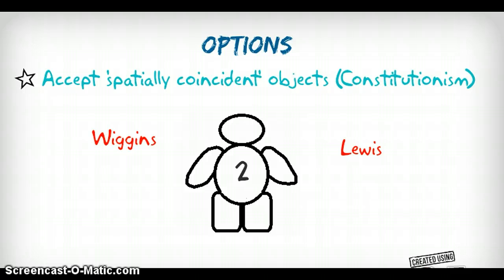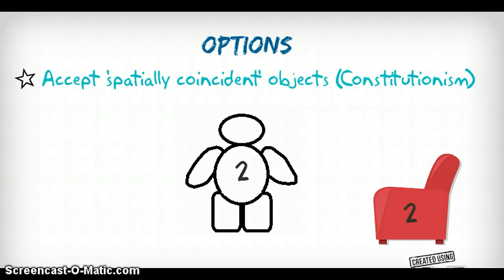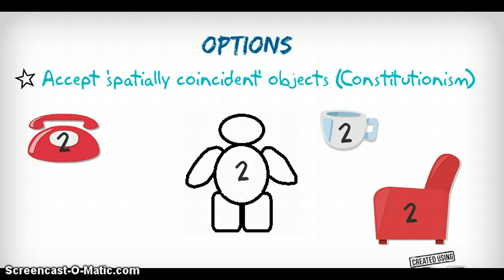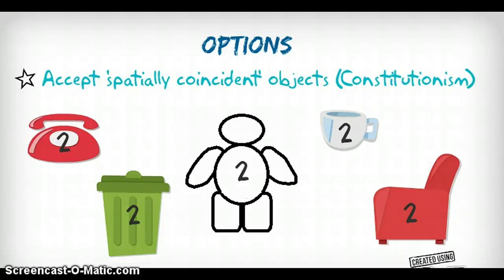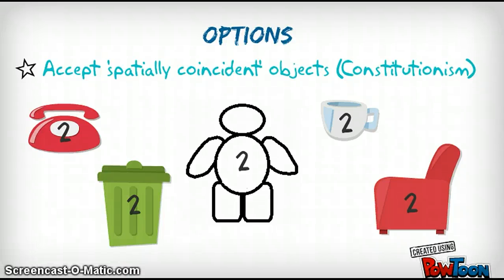Now, there are a number of problems with this view, but let's note just one for the time being. We might want to call it the problem of overpopulation, for according to this view, the chair that you're sitting on is not one but two objects. Your telephone is not one but two objects. Your teacup is two objects. Your rubbish bin is two objects. Indeed, you've been miscounting objects your entire life. For reasons such as these, some people think the constitutionist view is absurd.